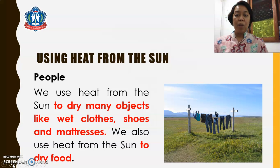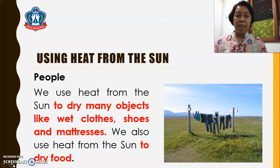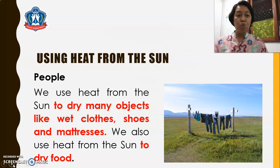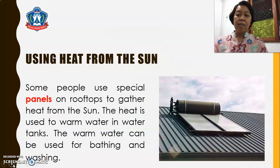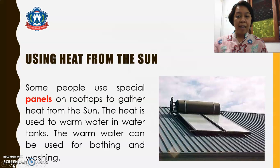So let's go now to using heat from the sun. For people, we use heat from the sun to dry many objects like wet clothes, shoes, and mattresses. We also use heat from the sun to dry food. Some people use special panels on rooftops to gather heat from the sun. The heat is used to warm water in water tanks. The warm water can be used for bathing and washing.